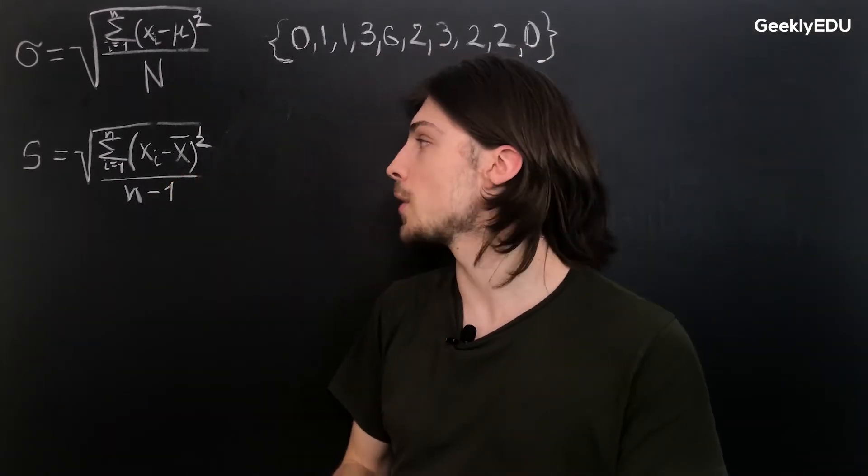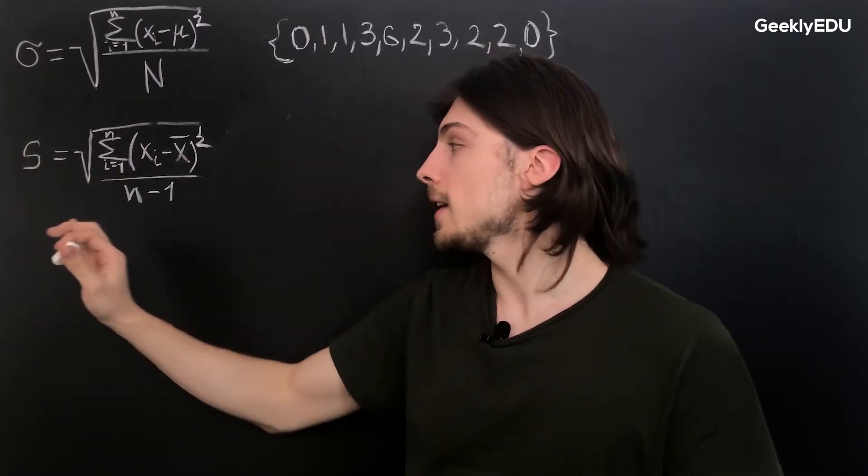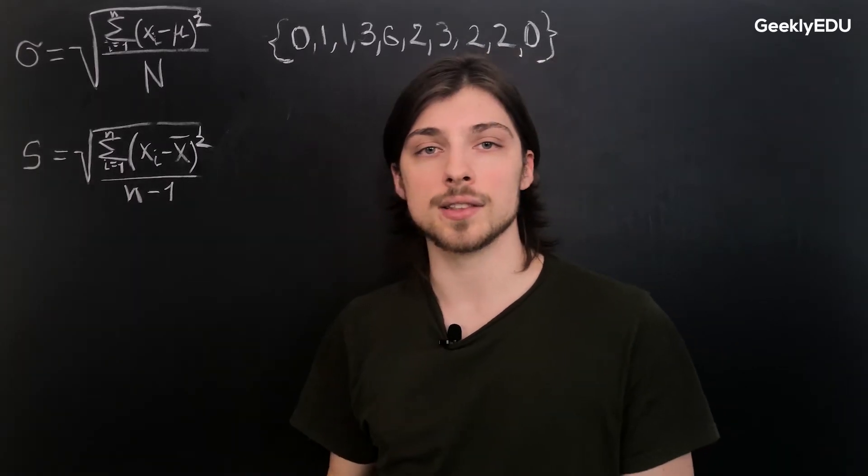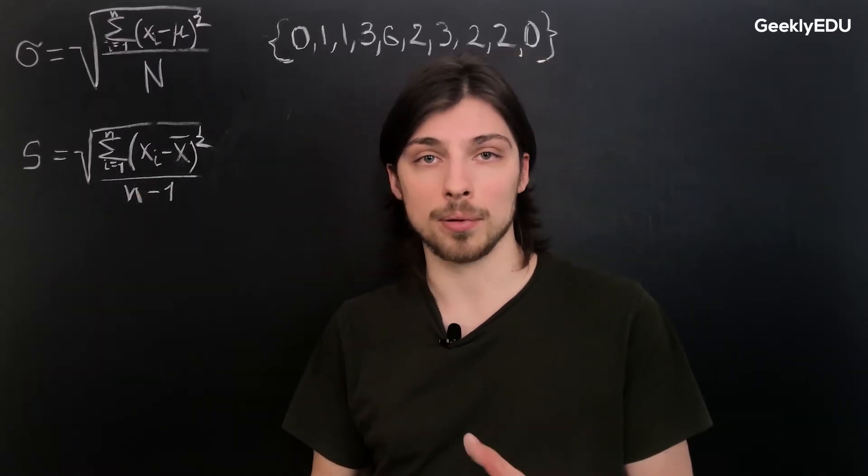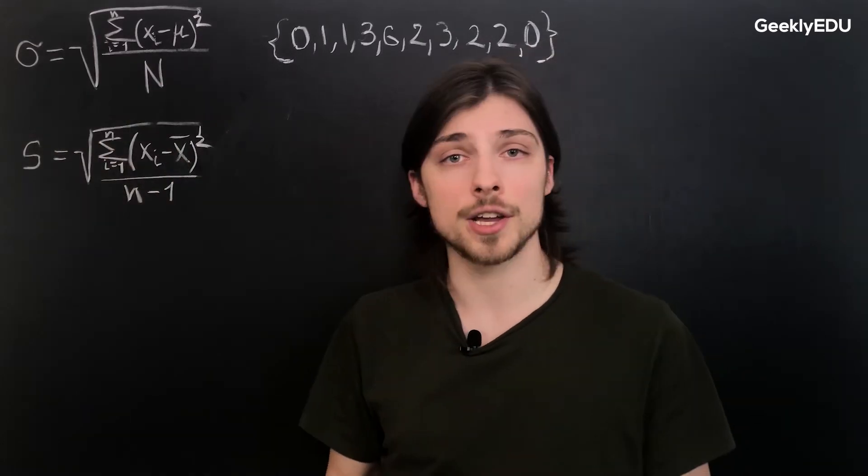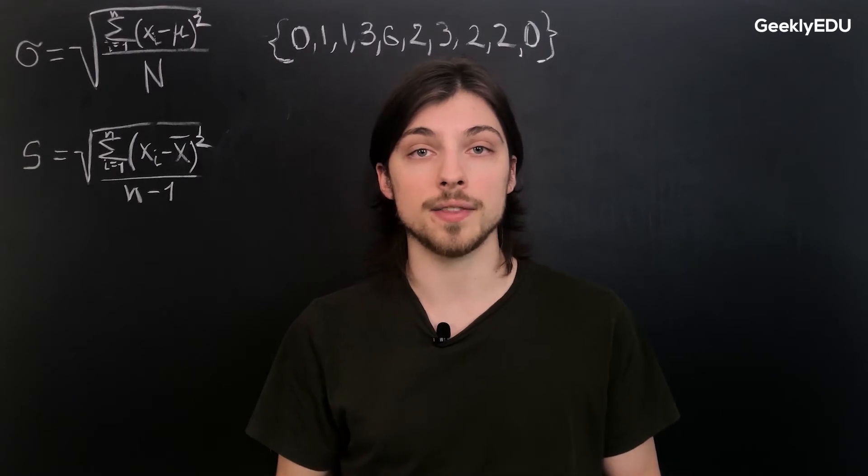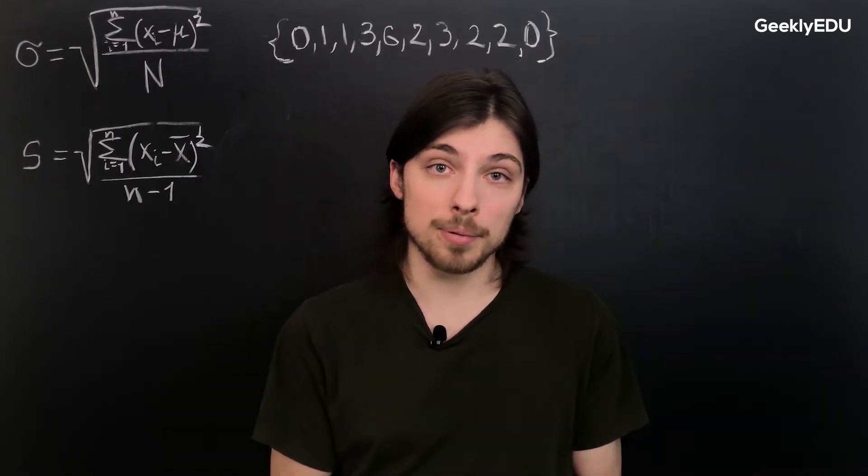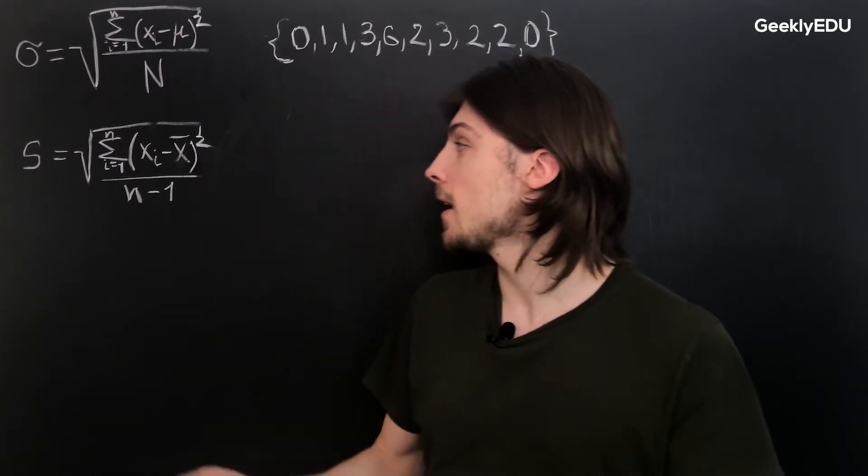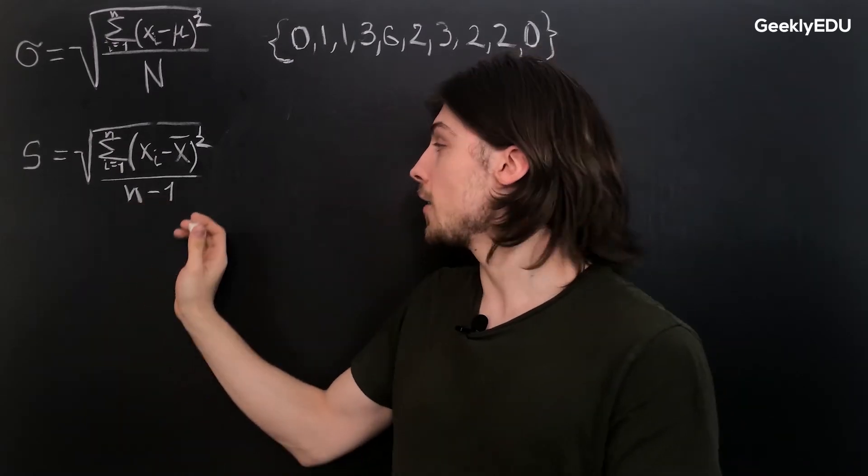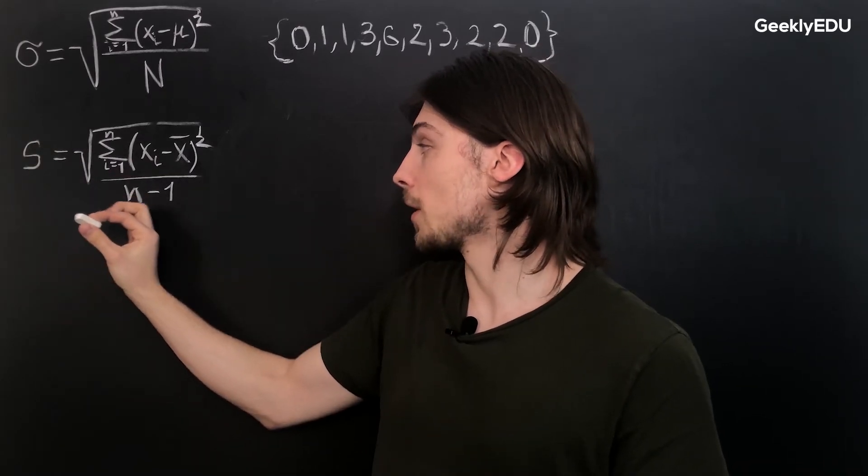A very important difference between this and this - so this one is denoted by sigma and this one is denoted by S - is that this formula over here calculates the standard deviation and thus the variance as well in a sample. And this formula calculates the standard deviation in a population. The difference arises from the fact that the sample, which is much smaller than the population, gives us a less accurate numerical value, and that's why we have to subtract 1 here. Since if the number here becomes smaller,